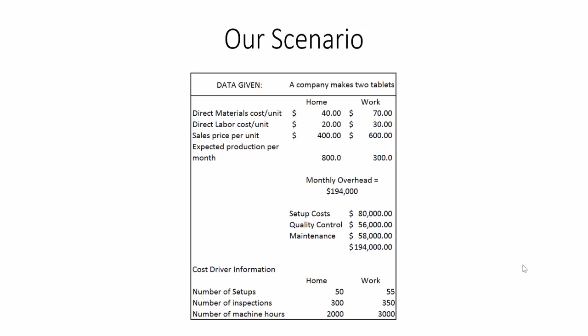Here's our scenario. We have various different pieces of information such as direct materials and direct labor, a sales price per unit, and expected production level per month. We also have an overhead bucket of $194,000 and some activities with their associated cost pools. The number of setups between the two products is 50 versus 55, the number of inspections is 300 versus 350, and the number of machine hours is 2,000 versus 3,000.